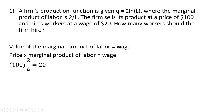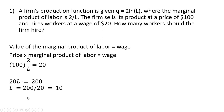Making the substitutions in for the price, the marginal product of labor, and the wage, we solve this equation for L. 100 times 2 is where the 200 is coming from, and then multiplying everything through by L, we get the result. So the profit-maximizing number of workers is 10.